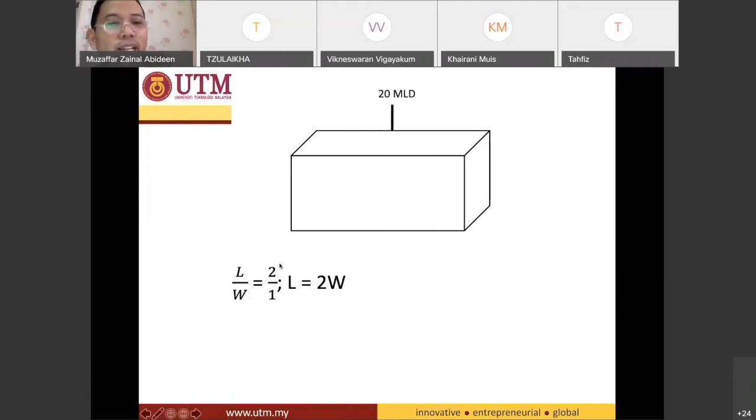Cross multiplication I think. So that is L is equal to 2W. That's the ratio of length and also the width. Then the dimension on the height of the tank which is 2 meters.